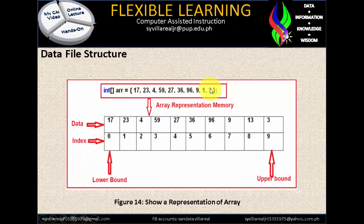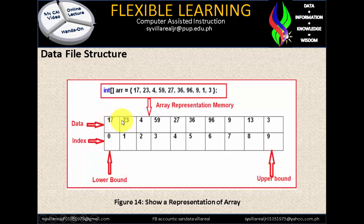From the beginning up to the end, it will go to its array representation in memory. The end is the upper bound. So we have the lower bound and the upper bound, with the data put in by the programmers, and the index generated only by the computer.